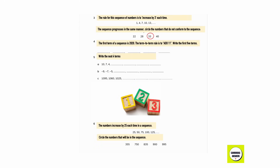Question number 4. A sequence has the term 2020 and the term-to-term rule is add 11. Write the first 5 terms of the sequence: 2020, 2031, 2042, 2053, and 2064.